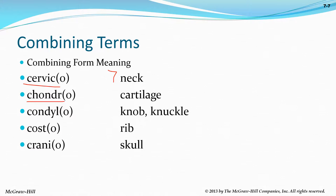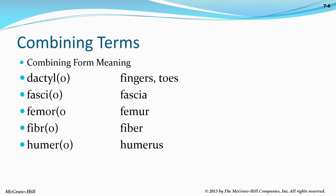Costa means ribs. Cranio refers to the skull. Every muscle is covered by a tissue layer called fascia — like the layer you see when eating a chicken drumstick where the muscles fall apart; each muscle belly is wrapped in fascia. The femur is the largest bone — your thigh bone. The humerus is your upper arm bone. A lot of these terms are shortened versions of what they describe.